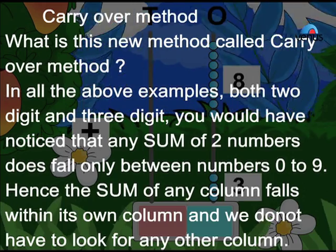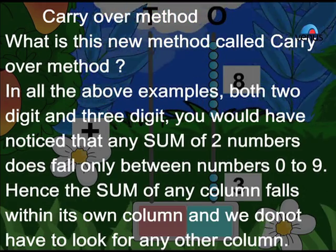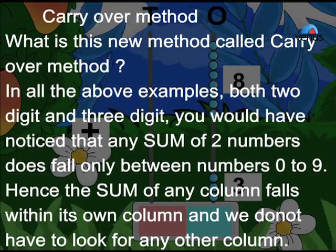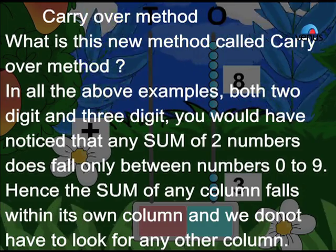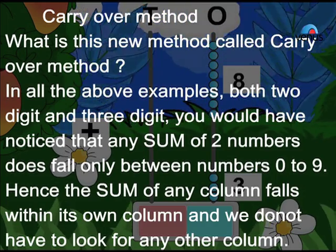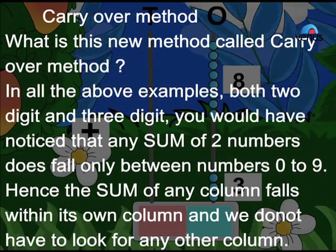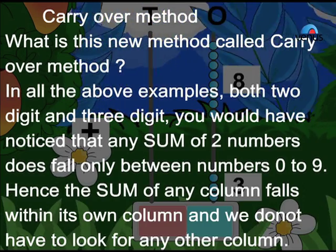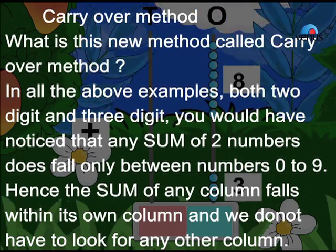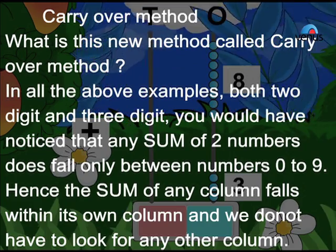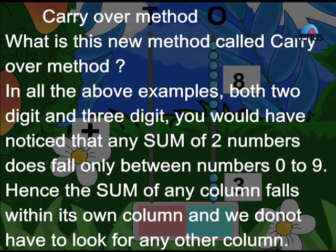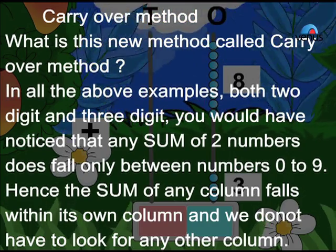Addition carry over method: What is this new method called carry over method? In all the above examples, both two-digit and three-digit, you would have noticed that any sum of two numbers does fall only between numbers 0 to 9. Hence, the sum of any column falls within its own column and we do not have to look for any other column.